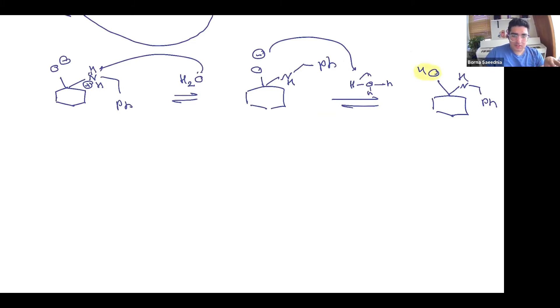In order for that OH group to leave and form a stable product, because this amino alcohol is not a super stable product, it can very easily go back to the carbonyl compound.